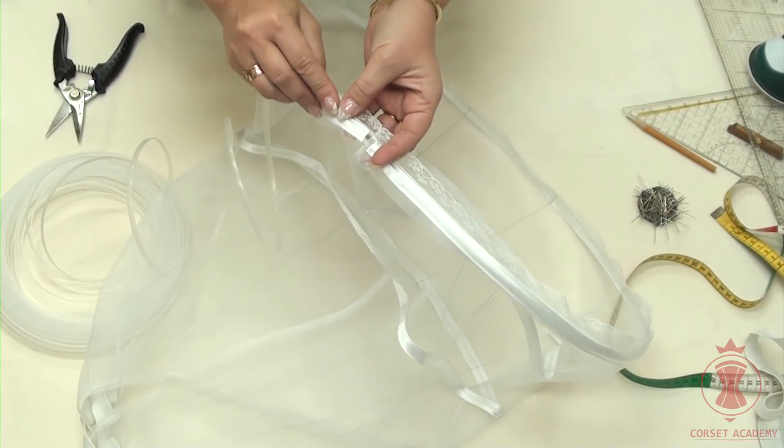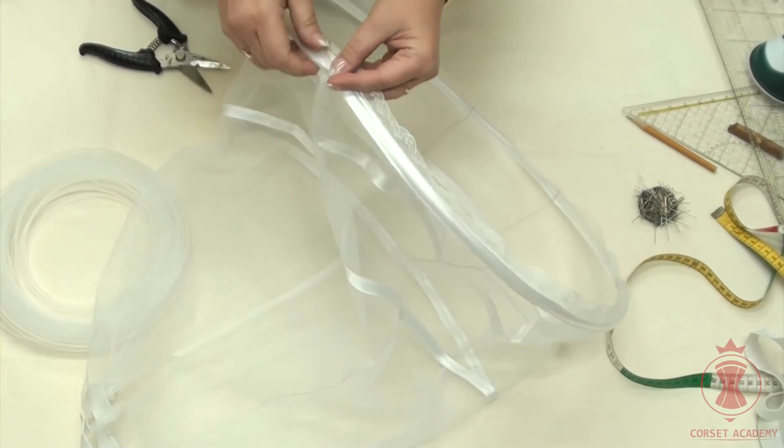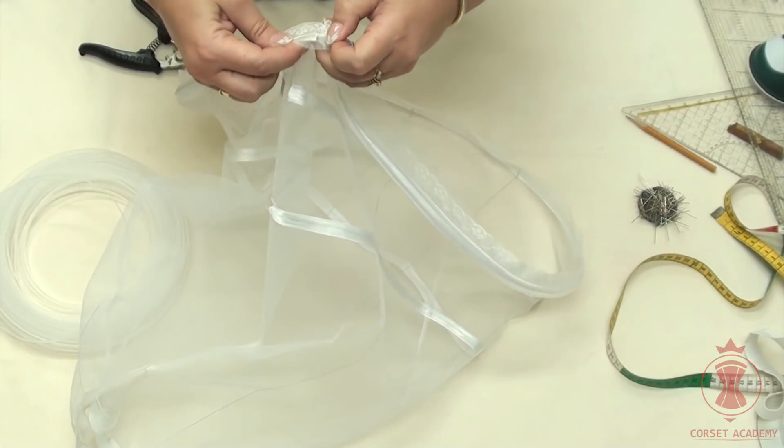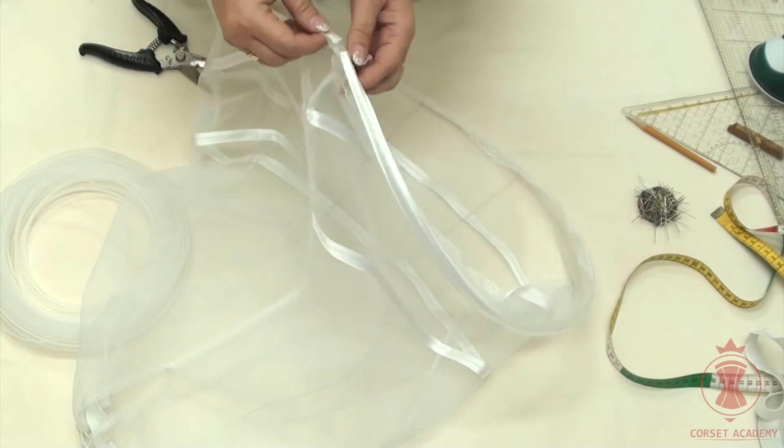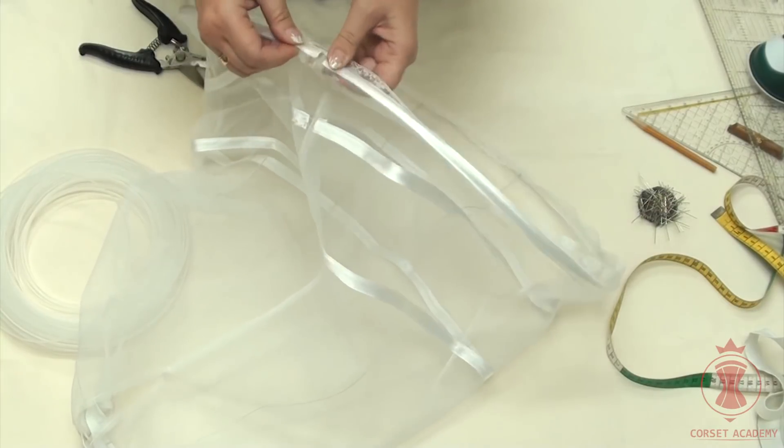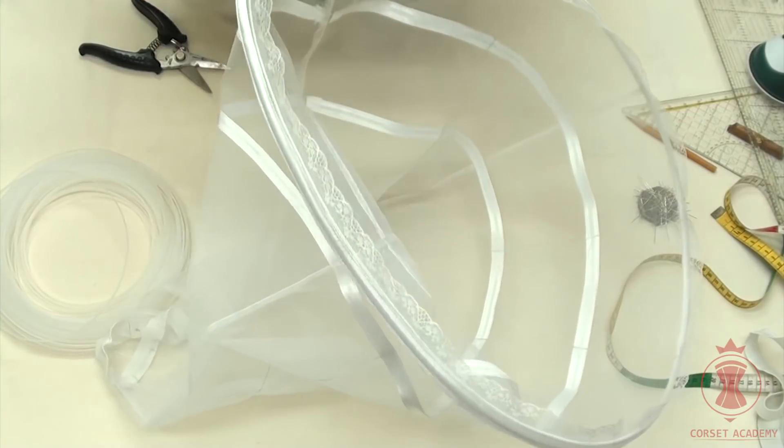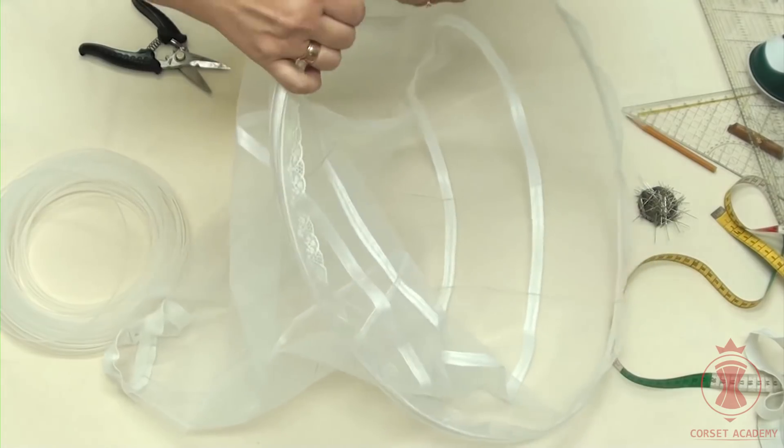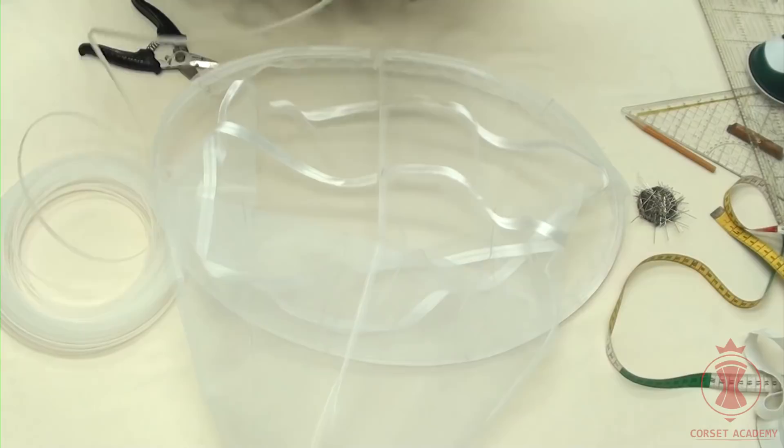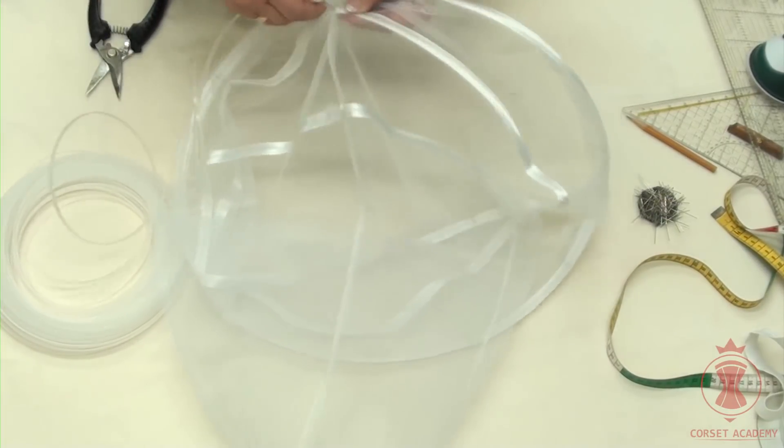I leave a little extra length for overlap, trim the bone and push the end in the opposite tunnel to secure it properly. And I insert plastic bones in the second and third tunnel the same way.